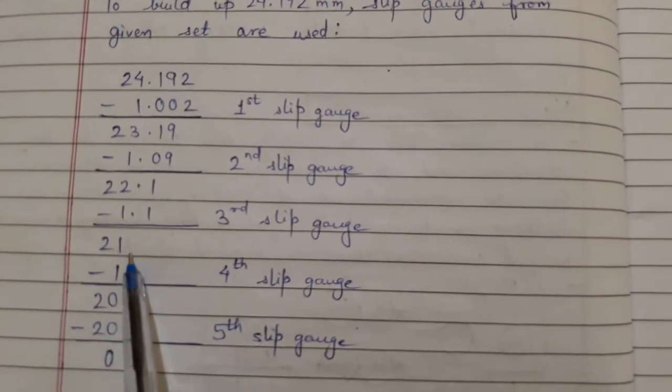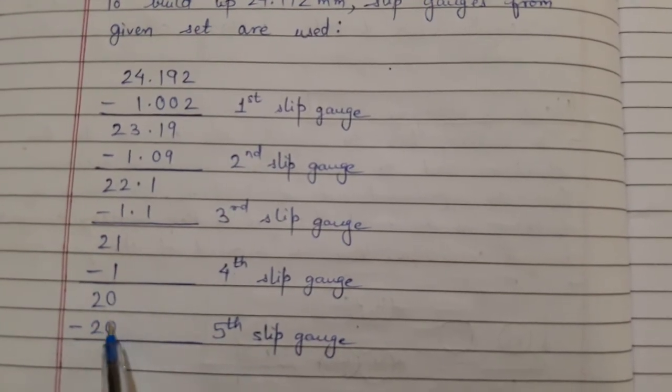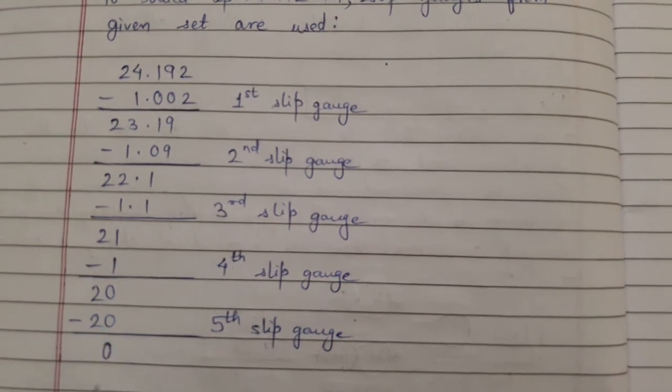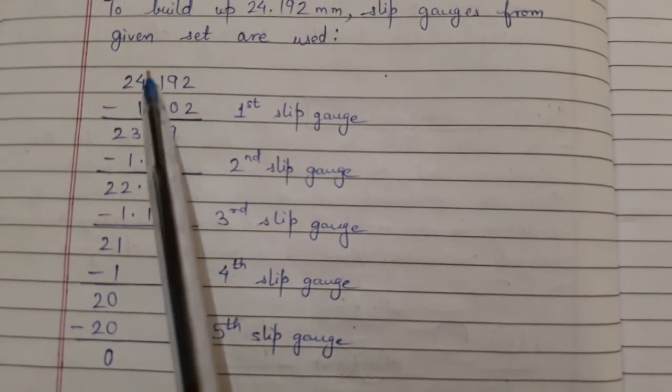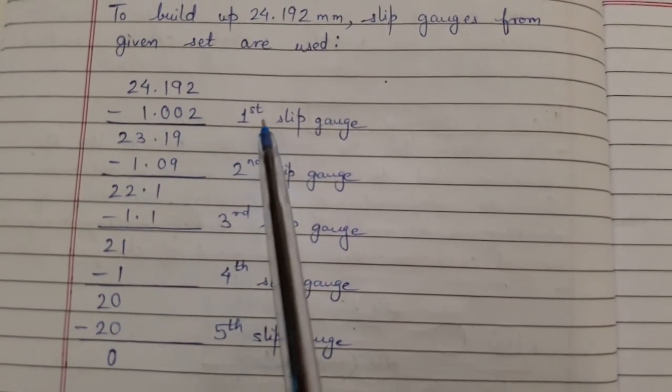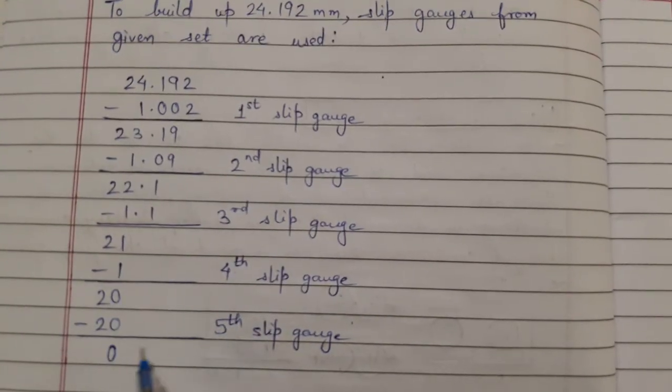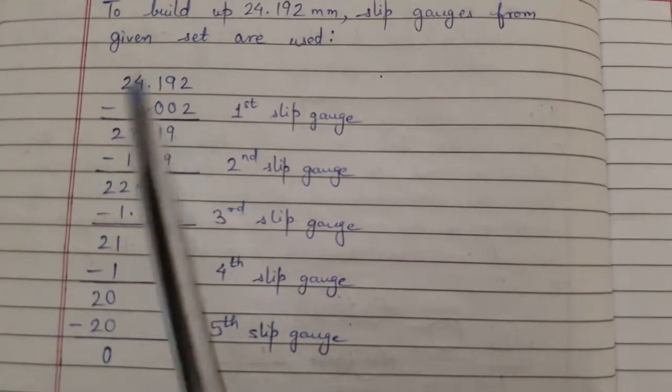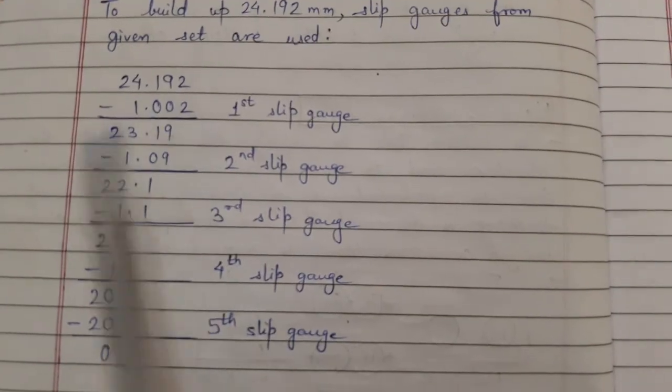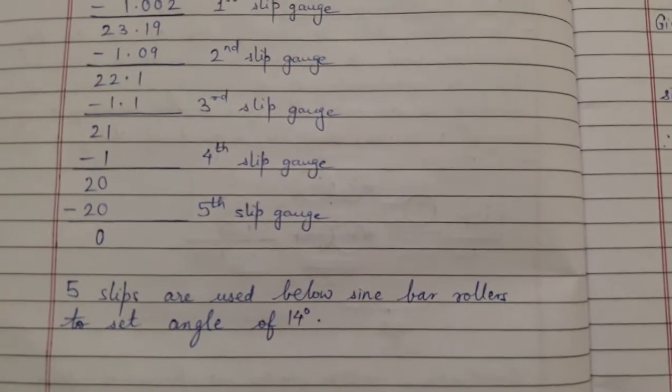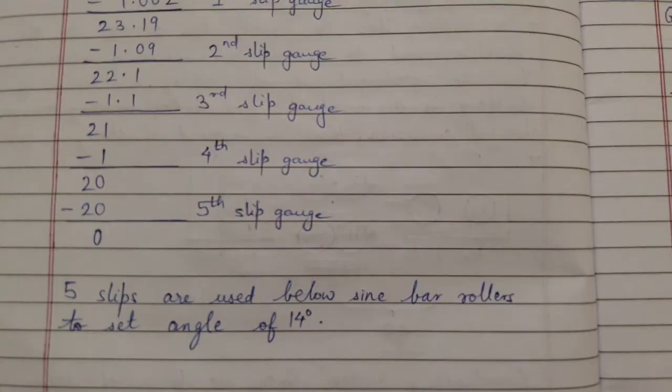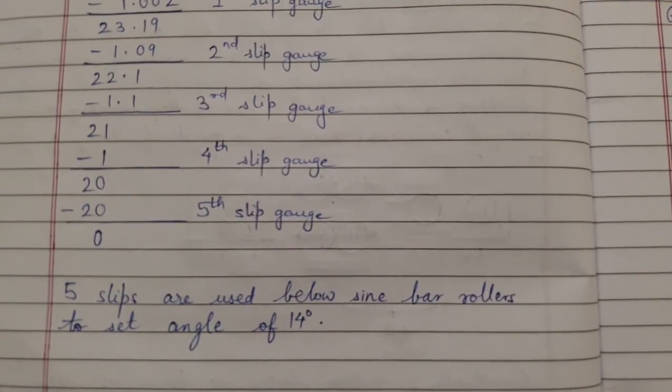This is how we will use different slip gauges from the different ranges to satisfy the dimension 24.192. The final answer is five slips are used below sine bar rollers to set an angle of 14 degrees.